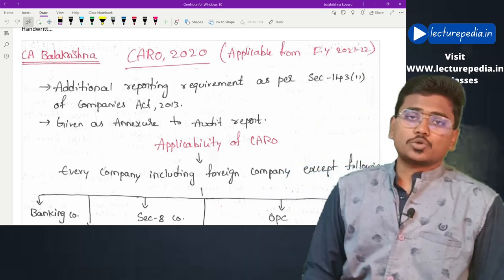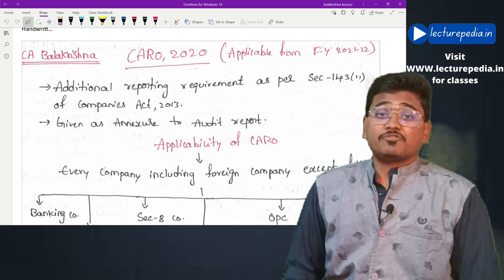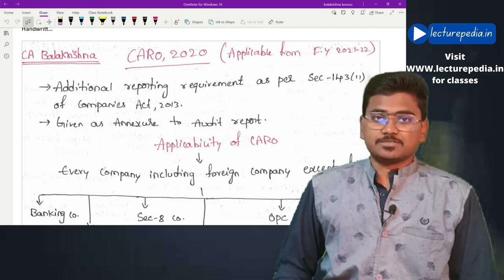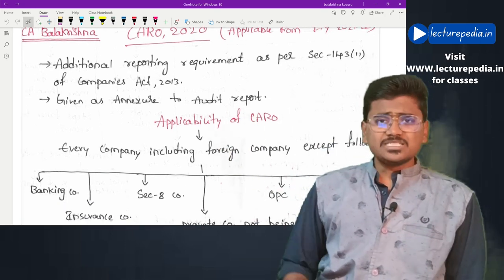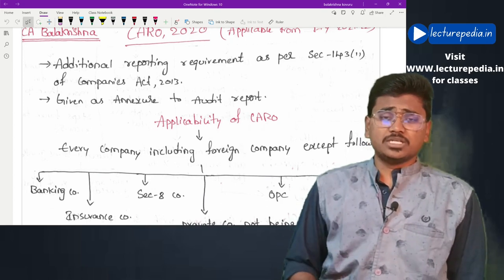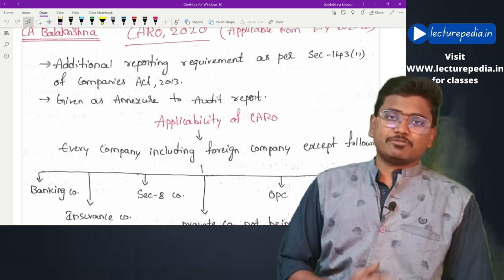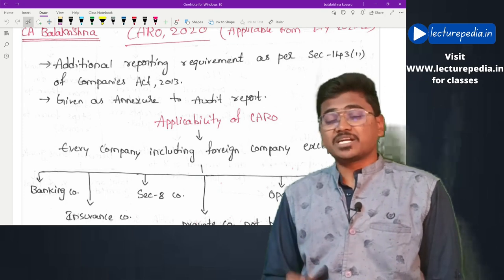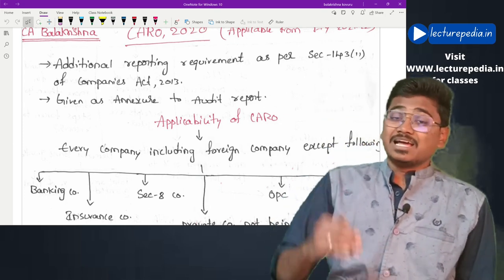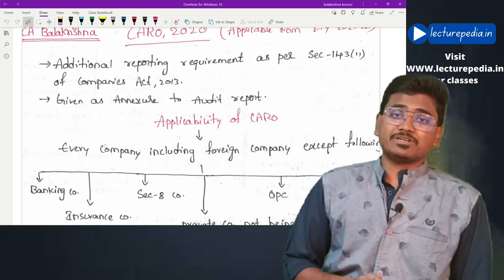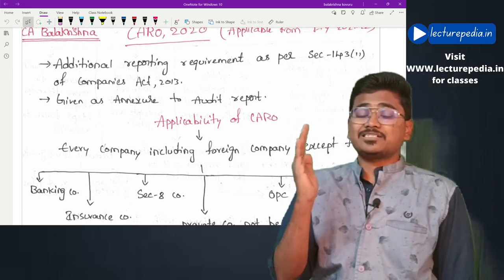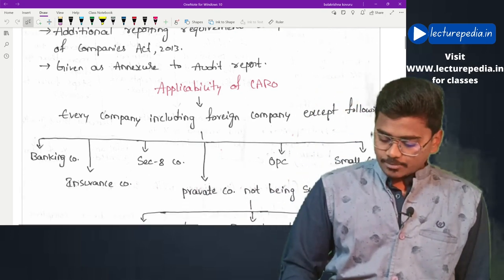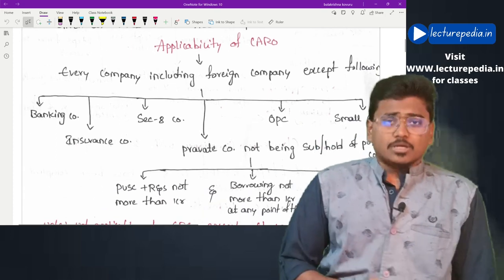CARO 2020 is applicable from financial year 2021-22 onwards. This CARO 2020 is an additional reporting requirement as per Section 143(11) of the Companies Act 2013. The CARO report will be given by the auditor as an annexure to the auditor's report.